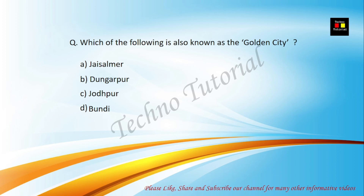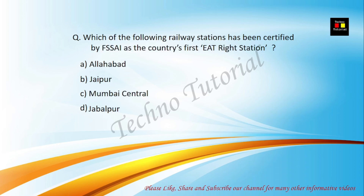Which of the following is also known as the Golden City? Options are Jaisalmer, Dungarpur, Jodhpur, and Bundi. The correct answer is Jaisalmer.